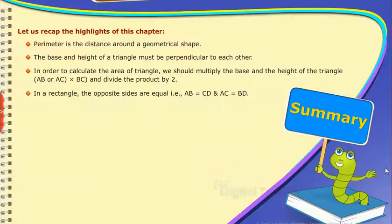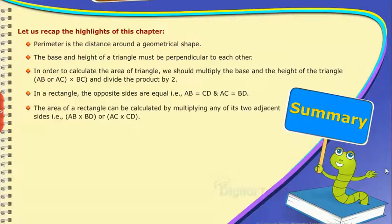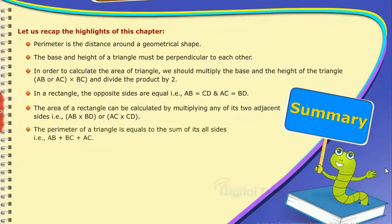The area of a rectangle can be calculated by multiplying any of its two adjacent sides, that is, AB into BD or AC into CD. The perimeter of a triangle is equal to the sum of all sides, that is, AB plus BC plus AC.